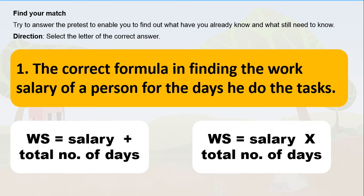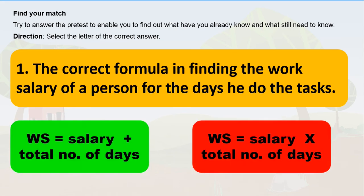Number 1: the correct formula in finding the work salary of a person for the days he does the task. Is it work salary equals salary plus the total number of days, or work salary equals salary times the total number of days? It is the first one — work salary is equal to salary plus the total number of days.